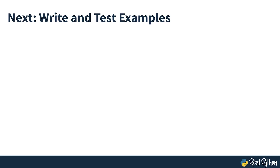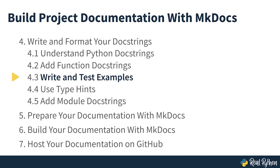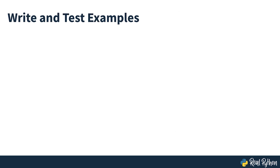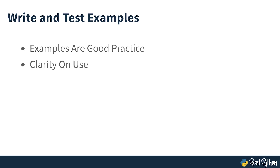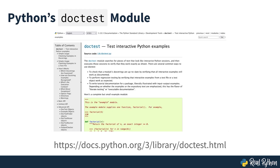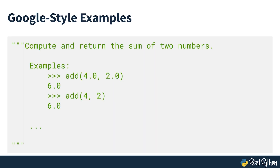Python docstrings can do more than describe and document. You can even use them to include short test cases for your functions, which you can execute using one of Python's built-in modules. Write examples and test them using DocTest. Adding examples to your docstrings is good practice. Doing this clarifies how to use the functions, and when you stick to a specific format, you can even test your code examples using Python's DocTest module. Google suggests adding examples to your docstring under a heading called Examples, which works well for running DocTests and building your documentation using mkdocs.